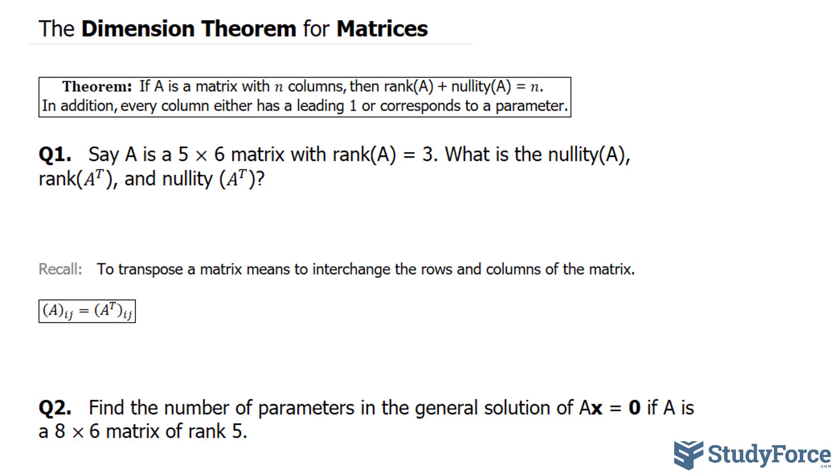Let's begin with the nullity. We can use the following relationship where the rank of A plus the nullity of A is equal to n. The rank is 3 plus the nullity of A is equal to 6. Rearranging, we should end up with the nullity of A is equal to 6 minus 3, therefore it's 3.